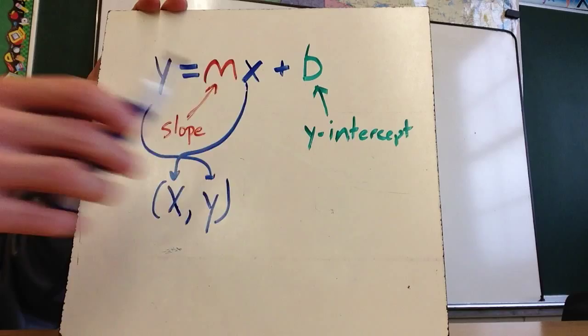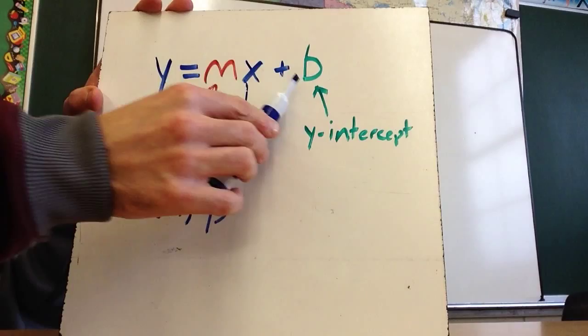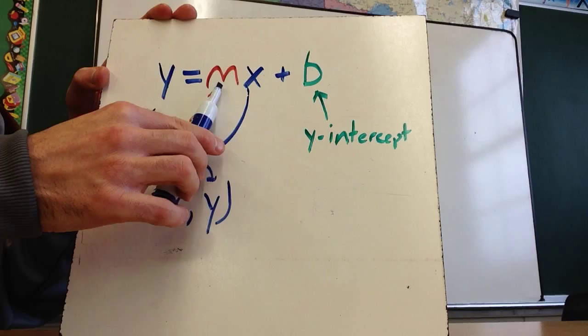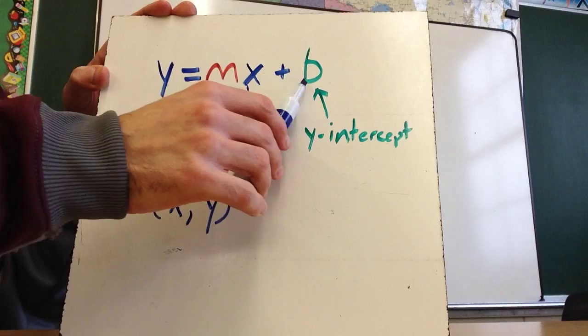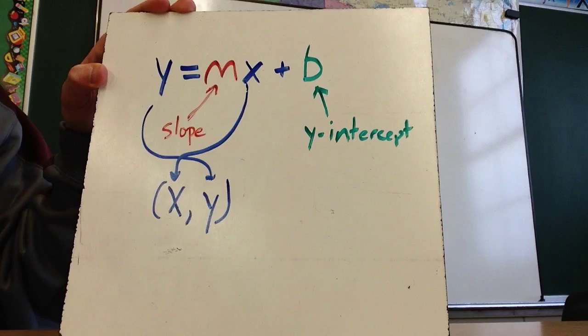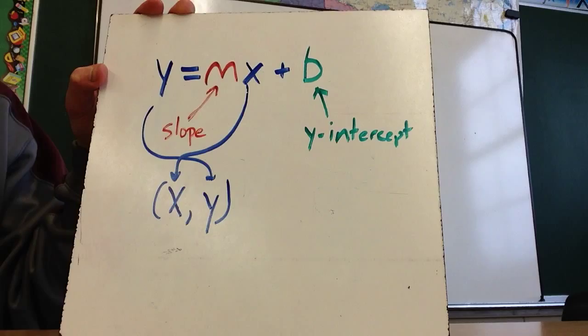And then the y-intercept, same thing. This can be a fraction. This can be positive. This can be negative. So if it's negative, sometimes you'll get mx, and then this will be minus a number. So if the y-intercept were negative 2, this would be mx minus 2 instead of writing plus negative 2. All right. So we're going to use this formula a lot. So you may want to pause the video at this point to write down this formula.